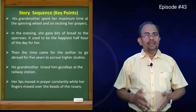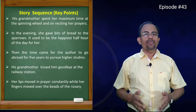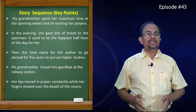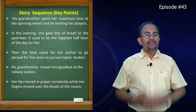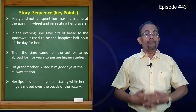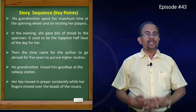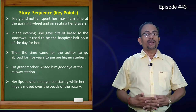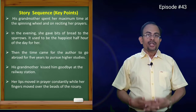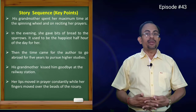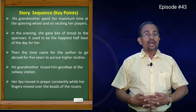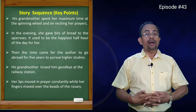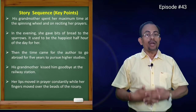His grandmother started spending most of her time at the spinning wheel, keeping on reciting her prayers. In the evenings, she threw little bits of bread to the sparrows who came in hundreds and sat around her — some even on her legs and shoulders. It used to be the happiest half hour of the day for her.